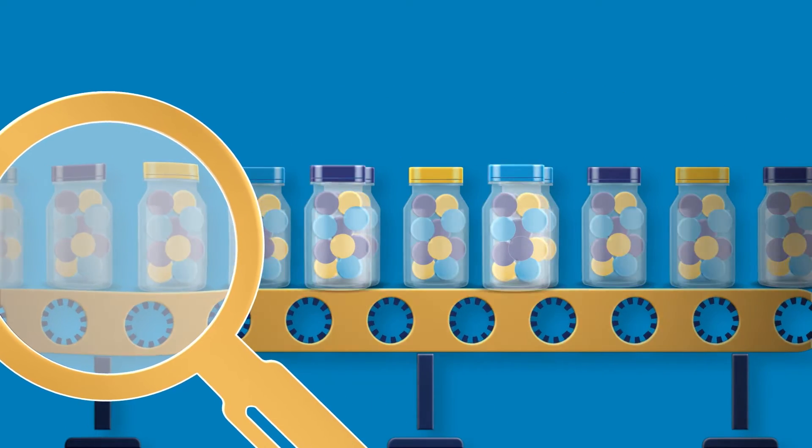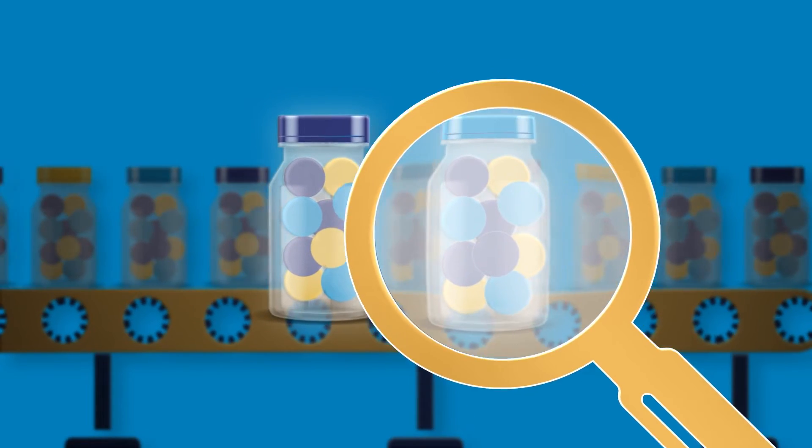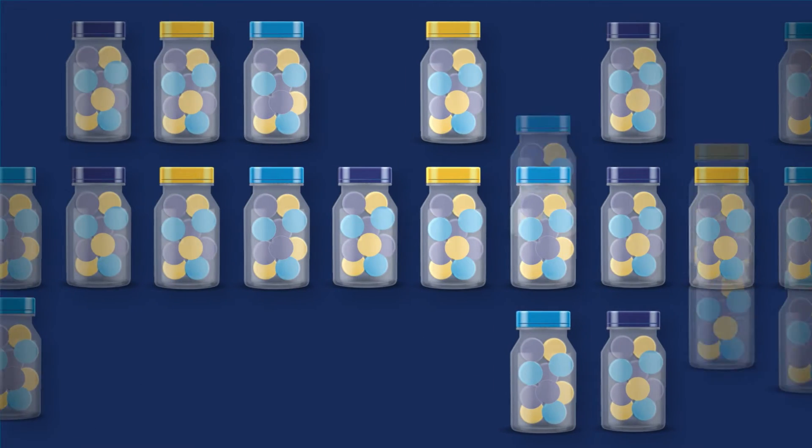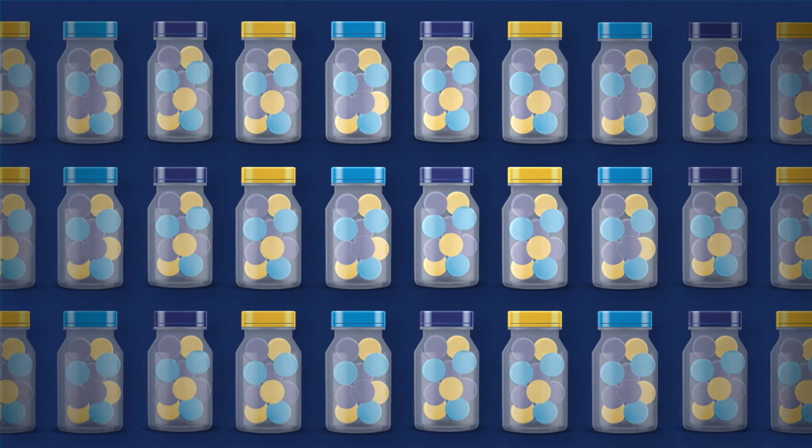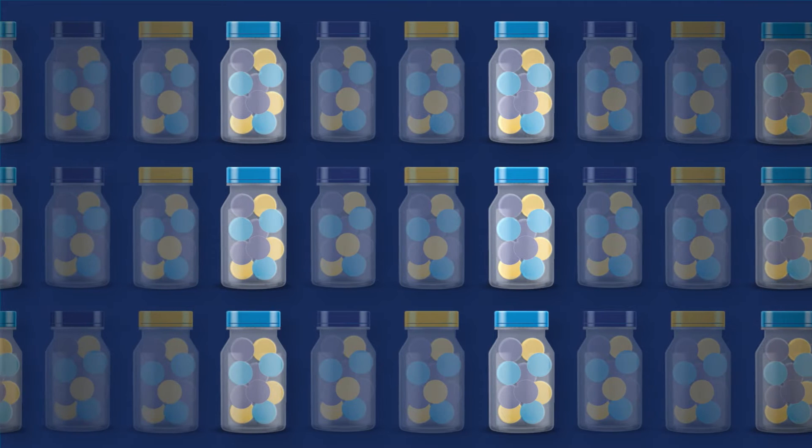Because biologics are usually made from living sources, there are inherent variations in any batch or dose. As part of the approval process, the FDA assesses a manufacturer's plan to control for variations between batches of the biological product.